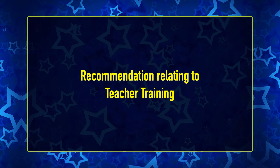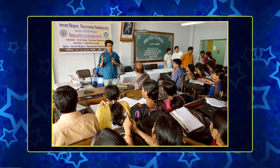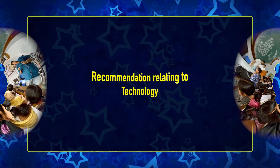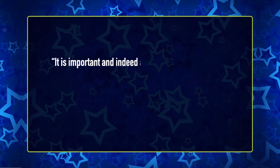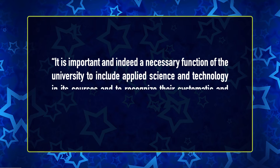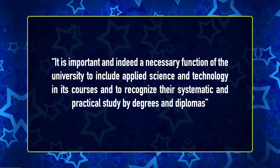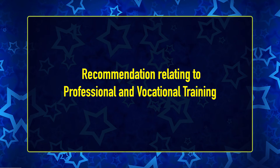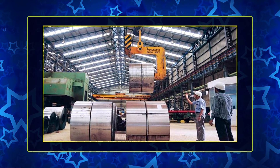Regarding recommendations related to teacher training, the Commission recommended that the output of trained teachers should be substantially increased. On technology, the Commission observed that it was an important and necessary function of the university to include applied science and technology in its courses and to recognise their systematic and practical study by degrees and diplomas. On professional and vocational training, the Commission recommended that universities must make provision for the efficient training of personnel needed for the industrial development of the country.